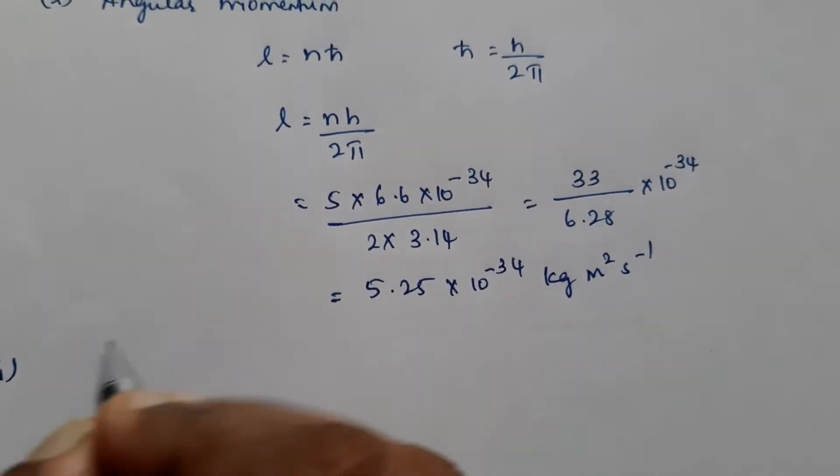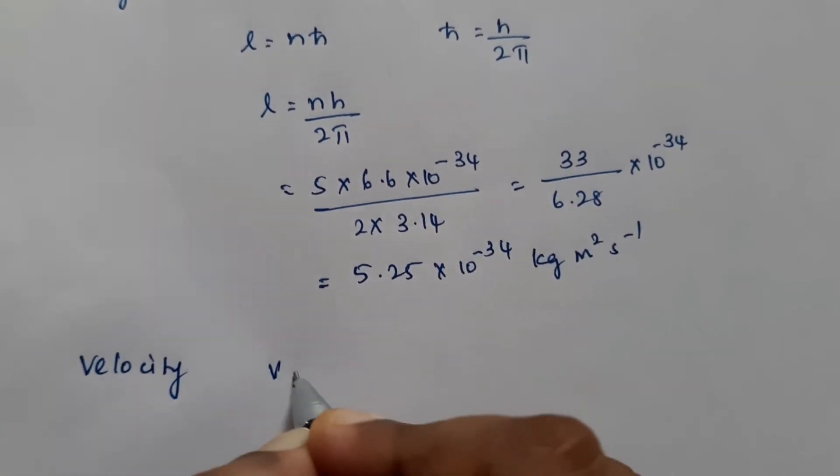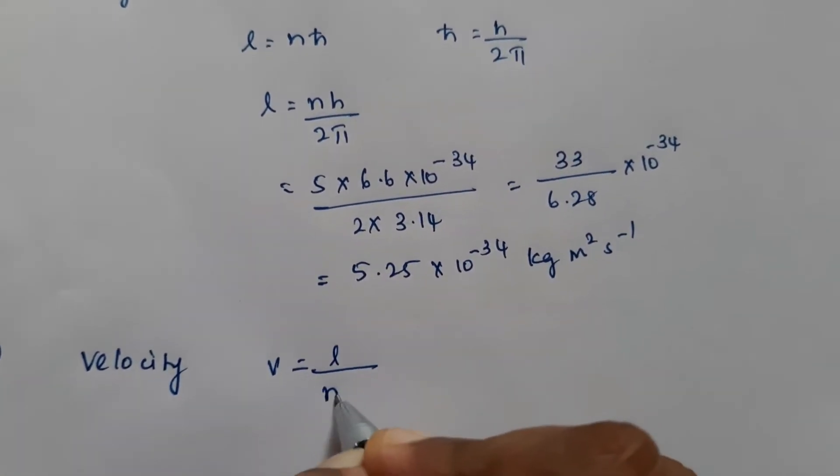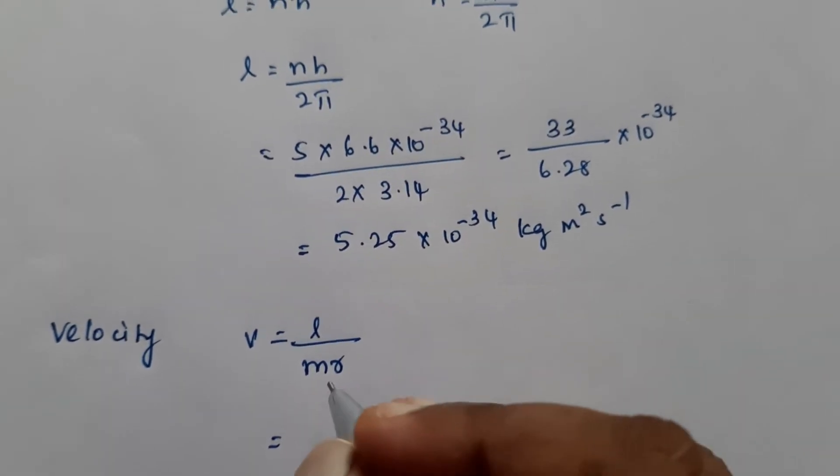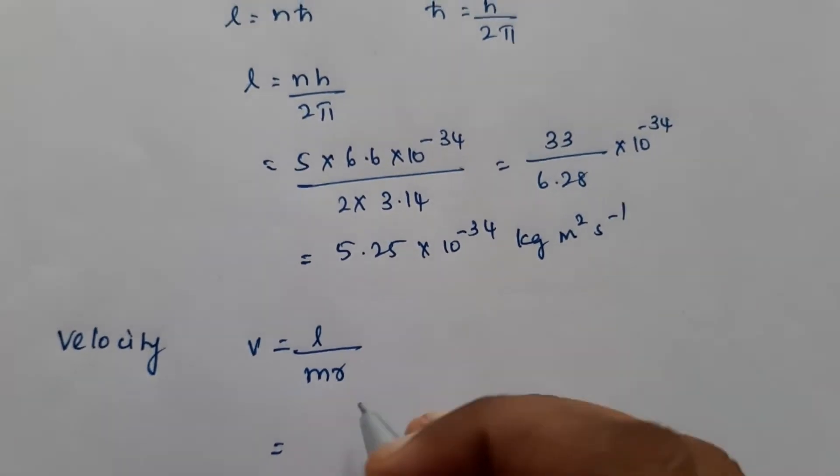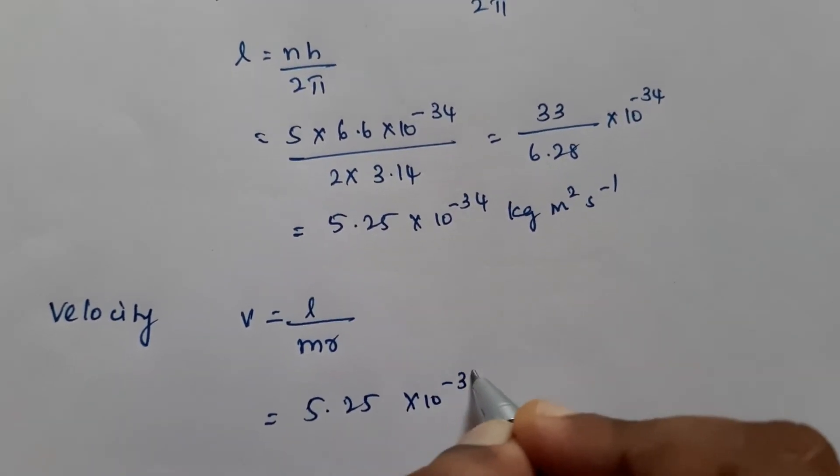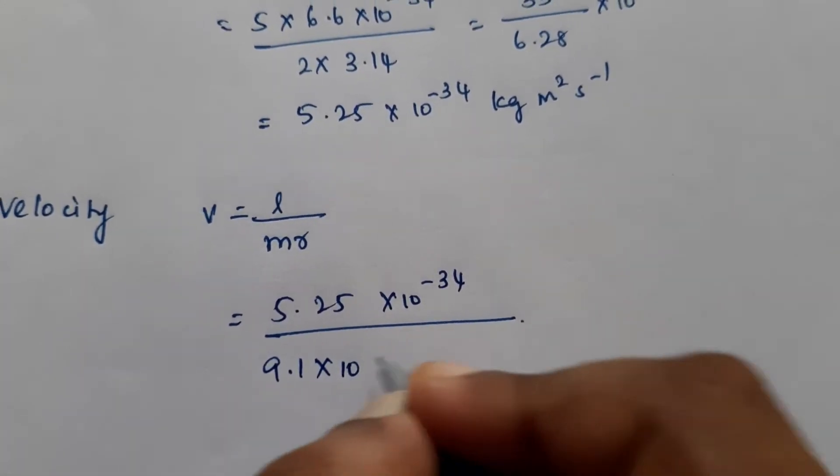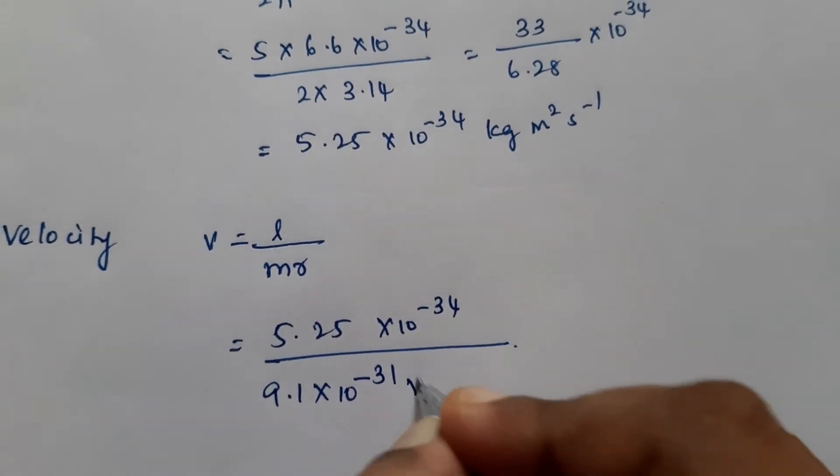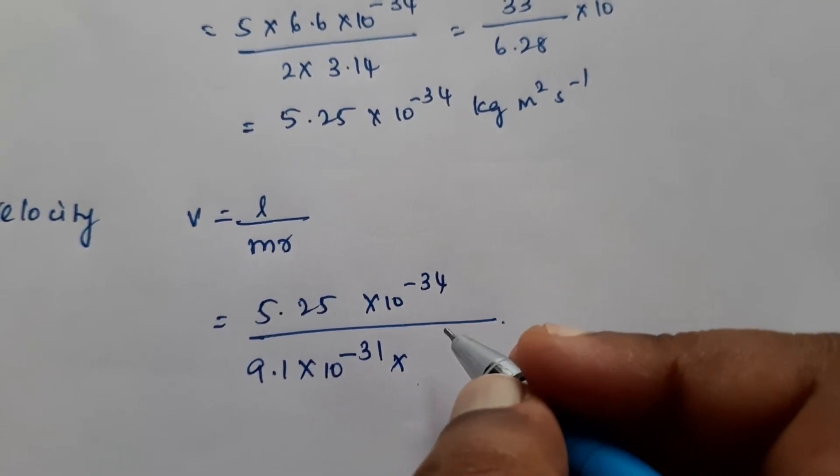The second part is we have to find out the velocity. The velocity is given by the formula L by M into R. So L is your angular momentum. That is 5.25 into 10 raised to minus 34 divided by mass of the electron is 9.1 into 10 raised to minus 31 into radius. Radius in the 5th orbit.